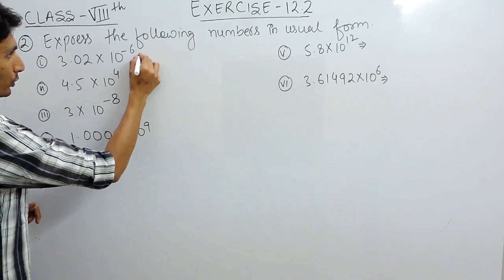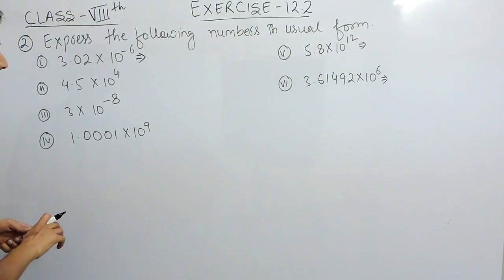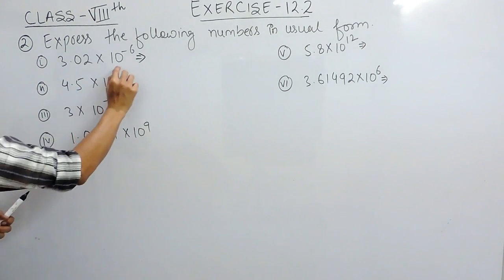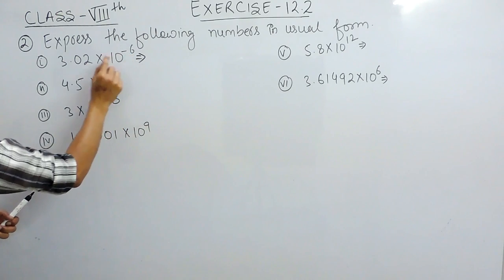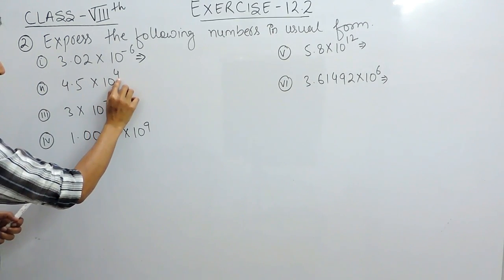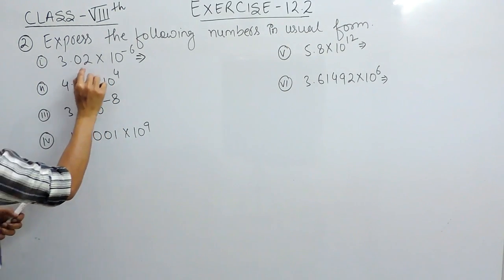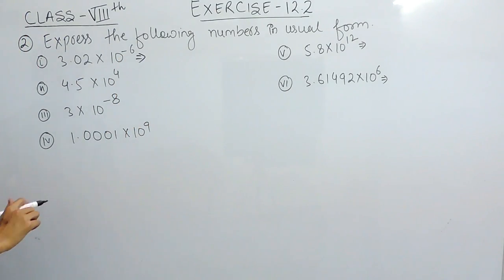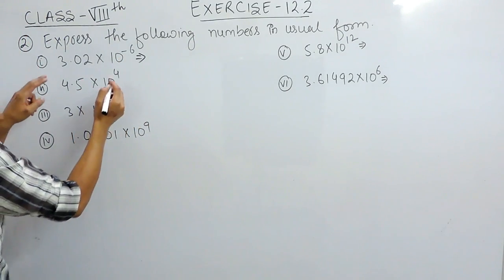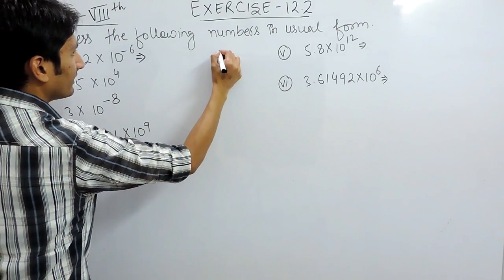The process is a bit reverse here. When the power is negative, you have to shift the decimal to the left-hand side. And if the power is positive, you have to shift the decimal to the right-hand side. Now let's solve the first part — the power is minus 6.